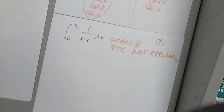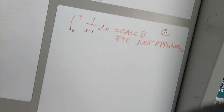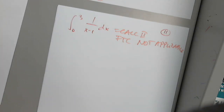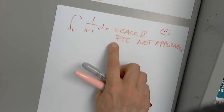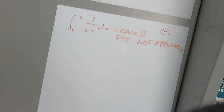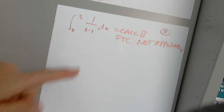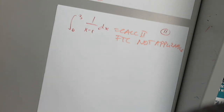You only need one of those answers. The reason is that FTC Part 2 is not applicable because the function is not continuous on the interval [0, 3] — continuity is a must condition. If it were 1/(x−5), for example, it would be applicable.